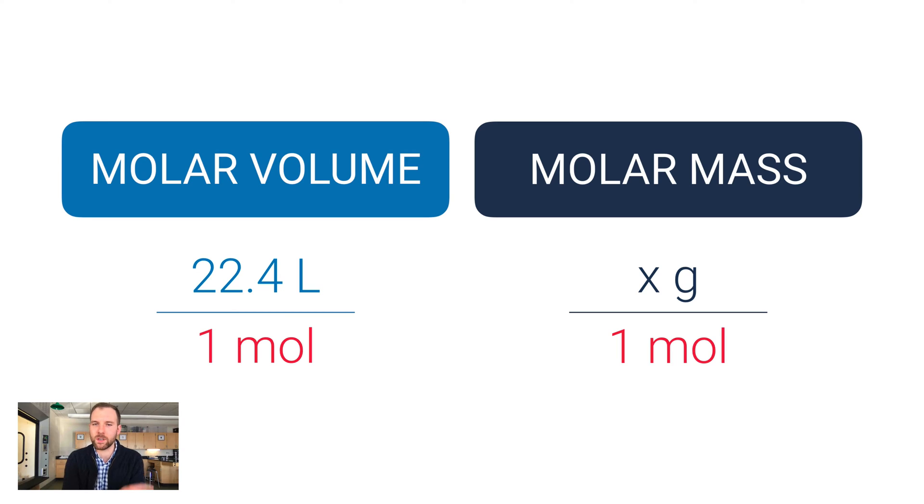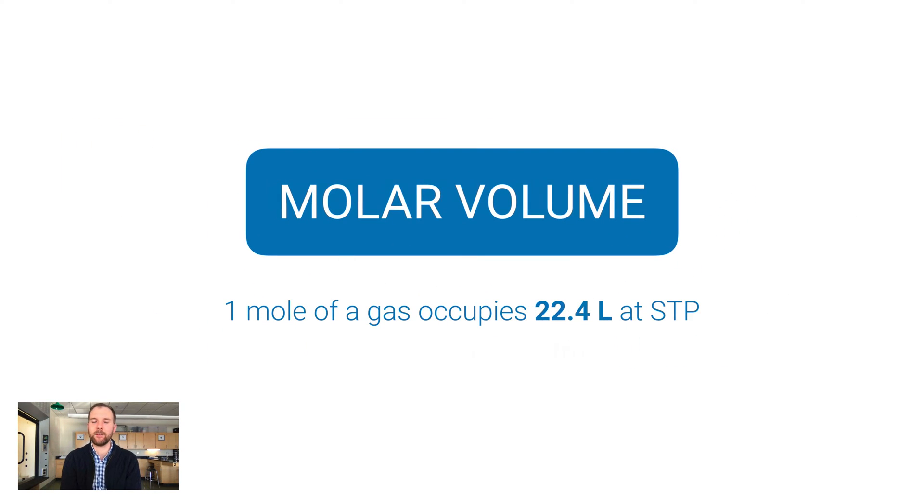Back to that definition: one mole of gas occupies 22.4 liters at STP. STP, don't forget, is 273 kelvins at standard temperature and one atmosphere of standard pressure. I just want to point this out: we've got one mole here which is n, we've got a volume which is V, I have a temperature T and a pressure P. We have enough to fill in one complete side of the combined gas law equation.